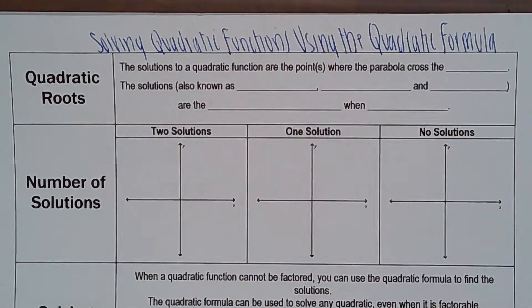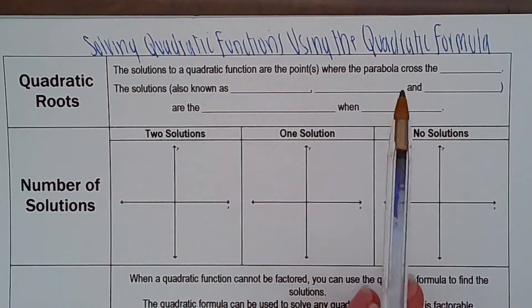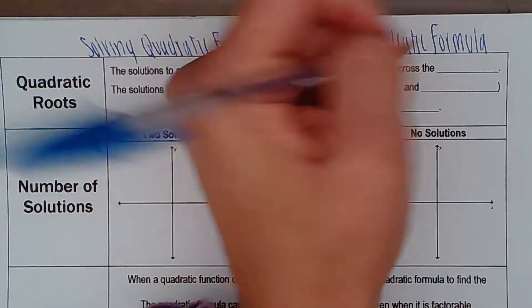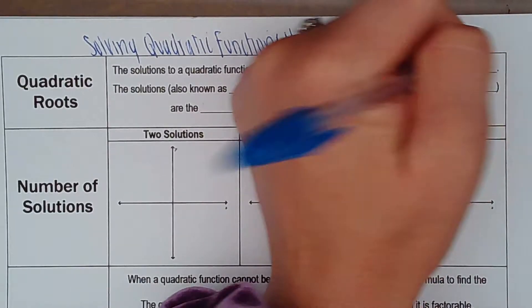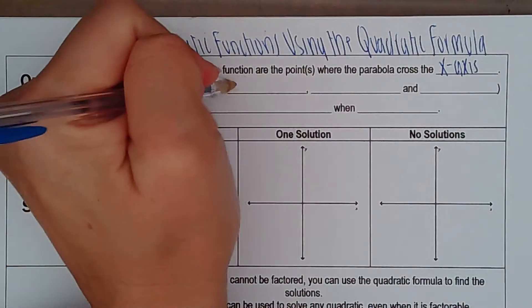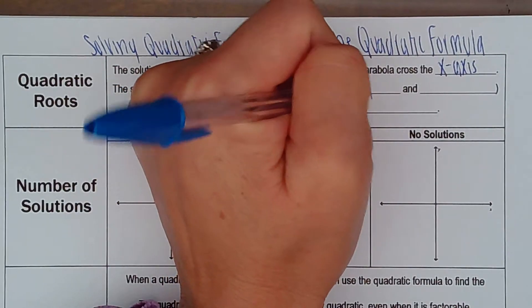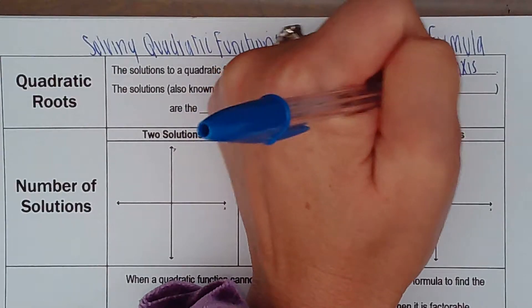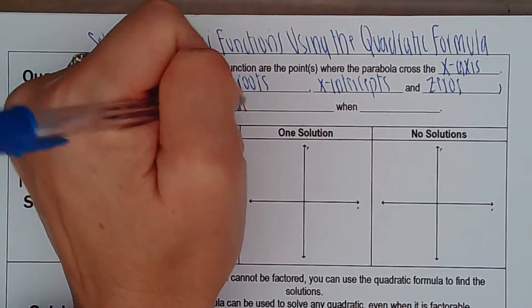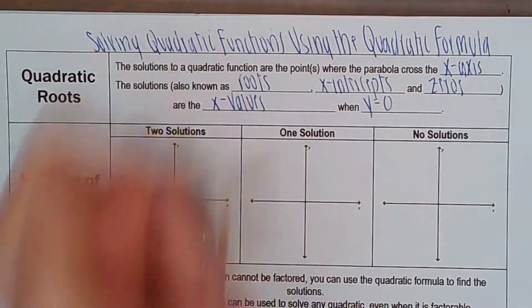Okay guys, we have made it to the quadratic formula. I'm solving quadratic functions using the quadratic formula. The solutions to the quadratic function are the points where the parabola crosses the x-axis. The solutions, also known as the roots, the x-intercepts, and zeros, are the x values when y equals 0, or when we set the equation equal to 0.